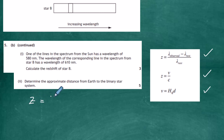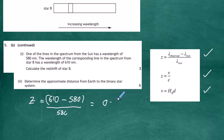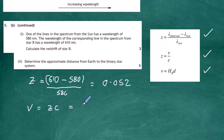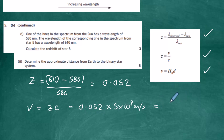We calculate z using: observed wavelength 610 nm minus rest wavelength 580 nm, divided by 580. That gives z = 0.052. Now we calculate the recessional velocity by rearranging z = v/c to get v = zc = 0.052 × 3 × 10⁸ m/s. Note that the red shift z has no units, so multiplying by the speed of light gives units of m/s.